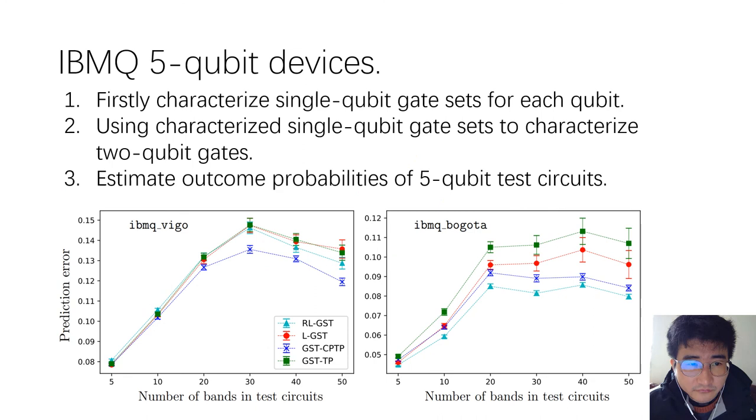Finally, we apply our method to characterize the noise in the 5 qubit devices from IBM quantum experience. Here, we firstly characterize single qubit gate sets for each of the qubits. Then, we use the single qubit gates to characterize 2 qubit gates. This is almost like process tomography for 2 qubit gates. Finally, we estimate the outcome probabilities of 5 qubit test circuits.